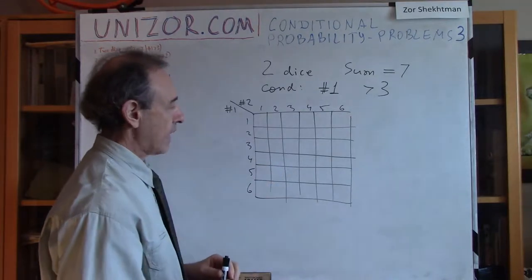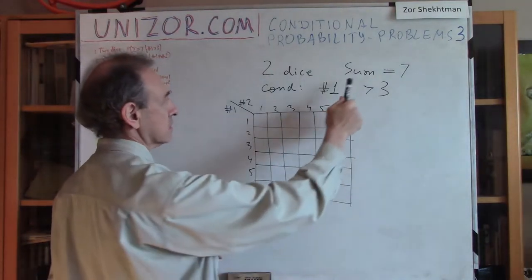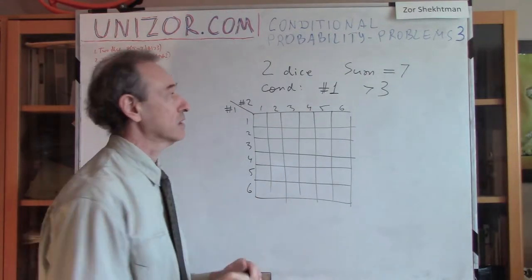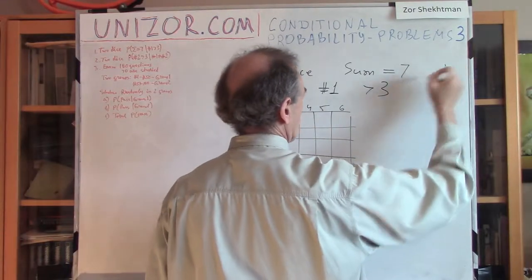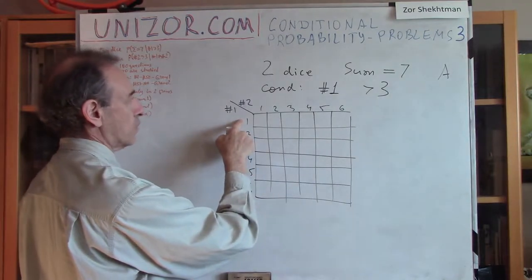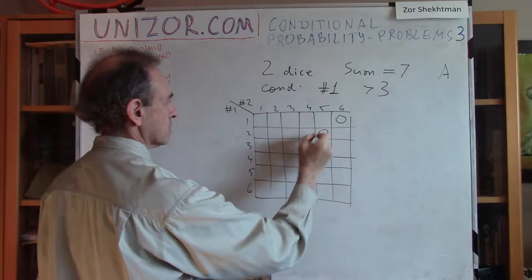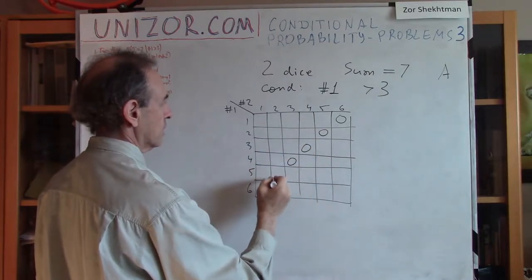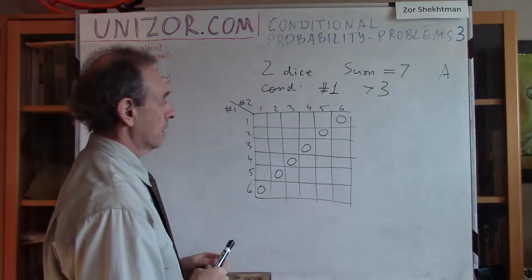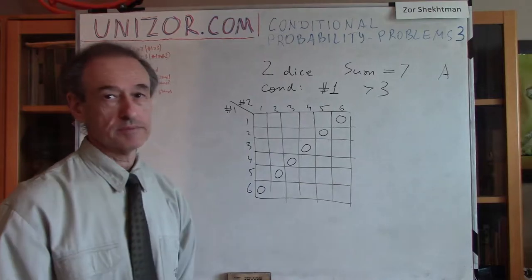Now let's graphically represent the events we're interested in. First, event A: the sum equals seven. Forgetting the condition for now, the pairs summing to seven are (1,6), (2,5), (3,4), (4,3), (5,2), and (6,1). These six elementary events together comprise event A — the sum equals seven.